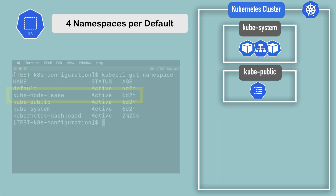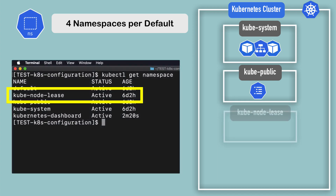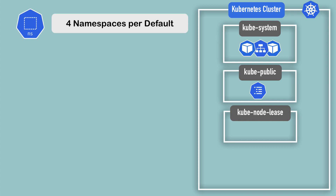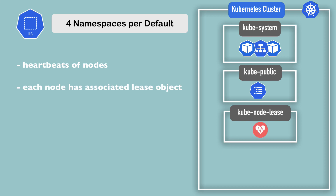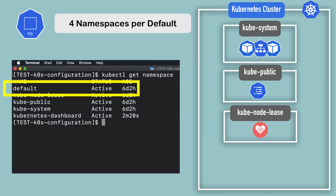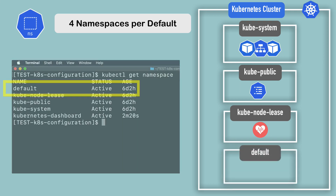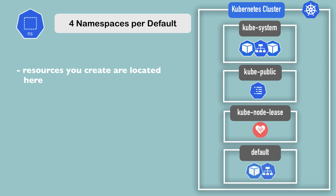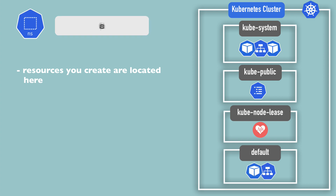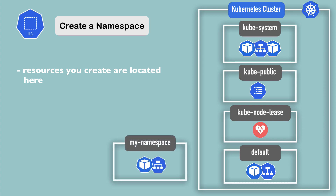The third one is kube-node-lease, which is a recent addition to Kubernetes. The purpose of this namespace is that it holds information about the heartbeats of nodes — each node gets its own object containing information about that node's availability. And the fourth namespace is the default namespace, which is the one you're going to be using to create resources at the beginning if you haven't created a new namespace.